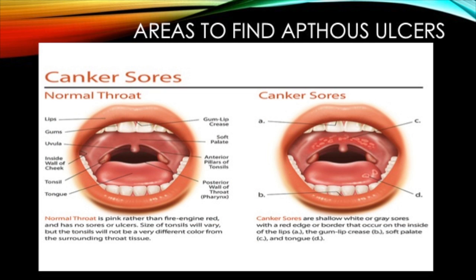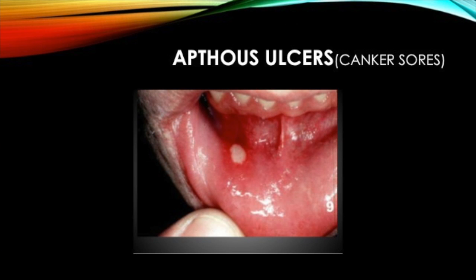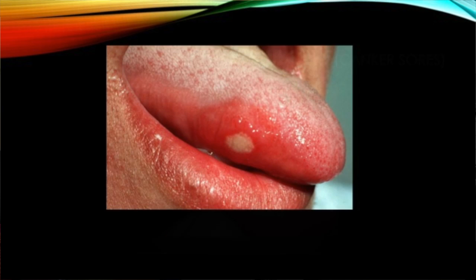Next, let's talk about the intraoral lesion called a canker sore, also called aphthous ulcers. They are small, shallow lesions that develop on the soft tissues in the mouth or at the base of the gums. Canker sores can be caused by stress, trauma, brushing too hard, food allergies or sensitivities, or a diet lacking vitamin B12, folic acid, or iron. Treatment is usually not necessary, as they disappear on their own within one to two weeks. If they become large, persistent, and painful, medical options such as prescribed mouth rinse, oral medication, or vitamin supplements exist.